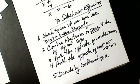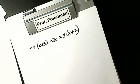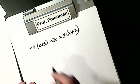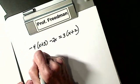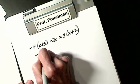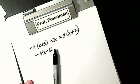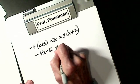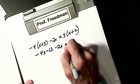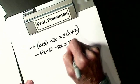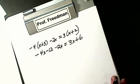So now we'll do one more that has everything in it. Distributive property first: minus 4X minus 12. We've got to copy over our minus 2X equals 3X plus 6. Did distributive property.